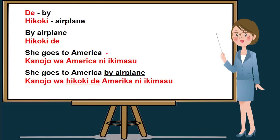If we add by airplane, it will be she goes to America by airplane. In constructing this kind of sentence, if we will use a pronoun, it will be in the beginning of the sentence. Unlike our previous example, we did not use any pronoun — the beginning of the sentence is hikokide if we don't use a pronoun. But in this sentence, we use a pronoun, so the pronoun will be in the beginning of the sentence.